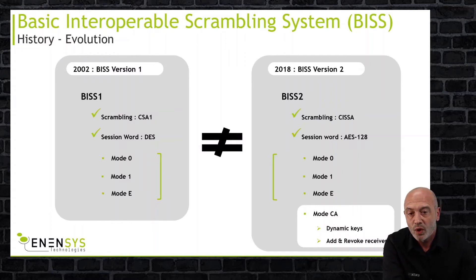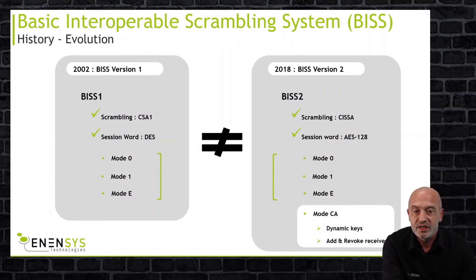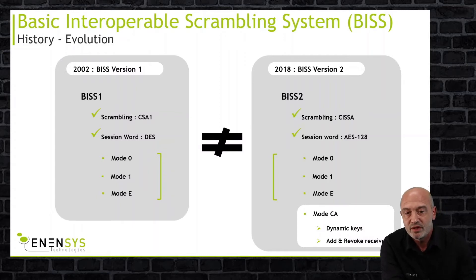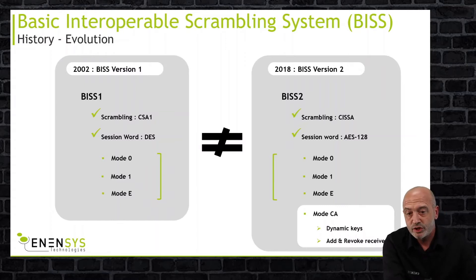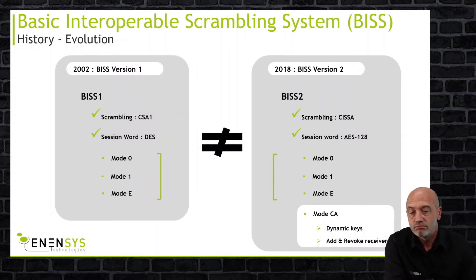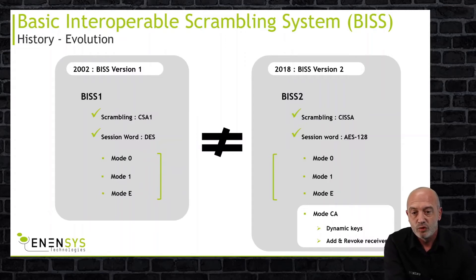In Mode 1, the key is exchanged between the transmitter and the receiver. Mode E: the content, like in Mode 1, is scrambled with a fixed key, but the key is encrypted to be exchanged between the uplinker and the receiver using DES algorithm. That's version 1 of the BIS encryption, used for roughly 20 years.